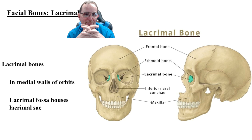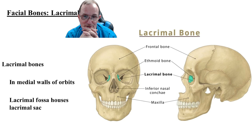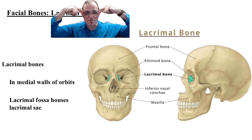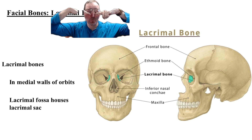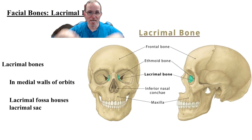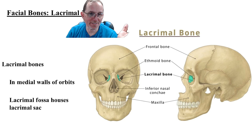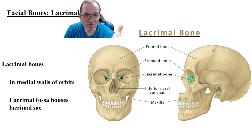The lacrimal bones are inside the orbit of the skull. They are very tiny and have a hole in them called the lacrimal canal. Tears roll down from the outside of our eyes toward the nose and drain through that lacrimal canal. That's the easiest way to remember this bone — it's where our tears drain.